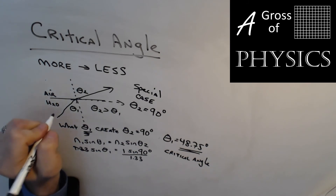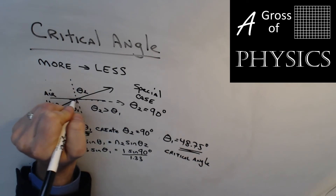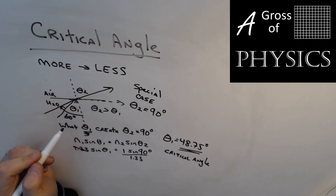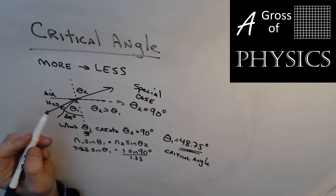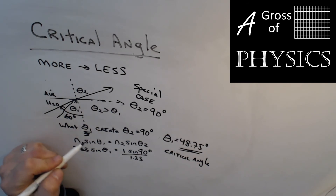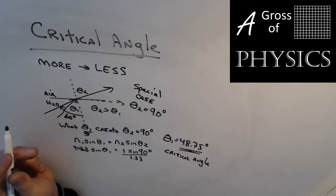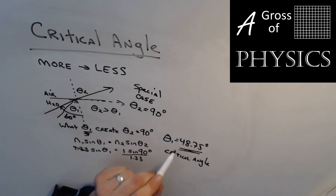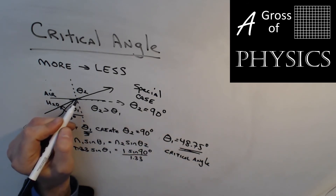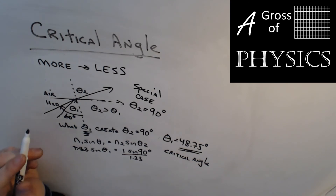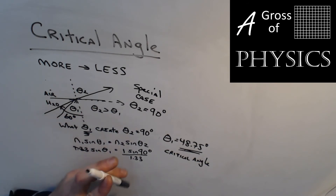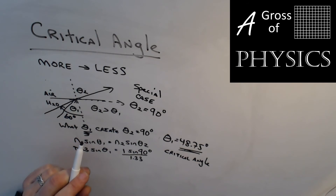If we send a light ray at an angle bigger than the critical angle — say 60 degrees — we get an error because the angle of refraction would be bigger than 90. Anything bigger than 49 degrees won't refract at all; it stays trapped inside. A few days ago I showed light trying to escape from a triangular prism — when I rotated the laser past the critical angle, it stopped escaping.